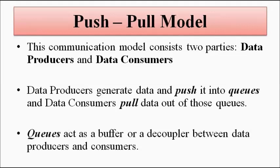In the request-response model, there were two parties involved: the client, which required the data — the consumer — and the server, which was the storehouse of data. In the push-pull model, the data producers generate data related to various topics and then push this data into queues.